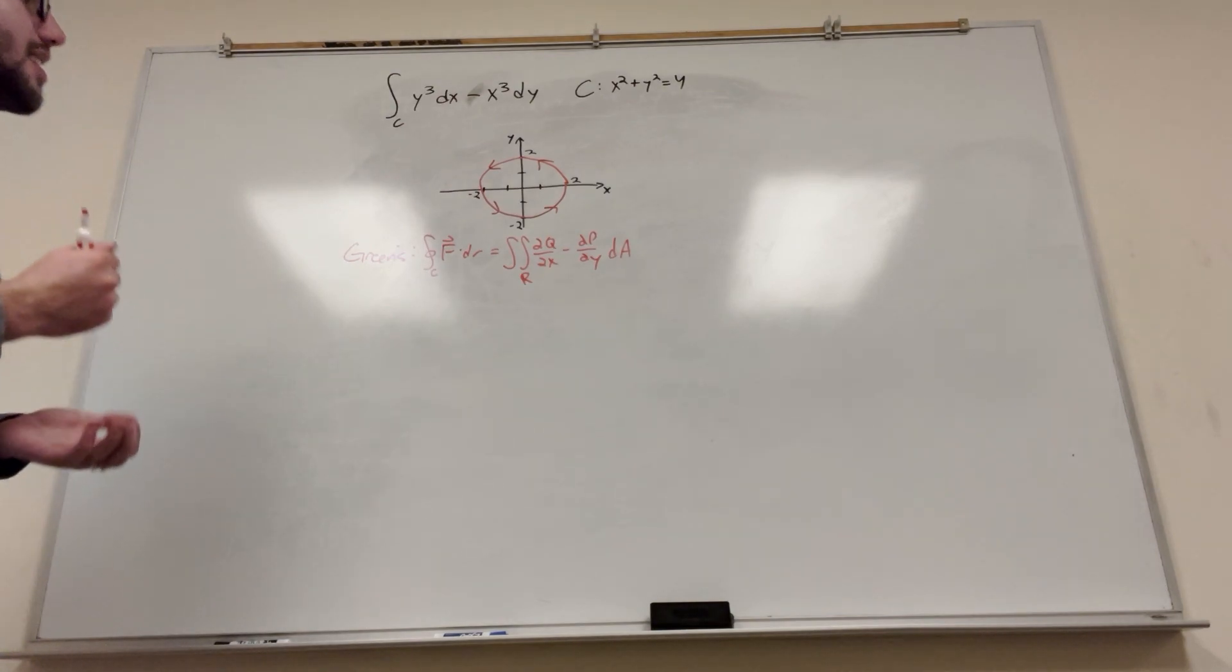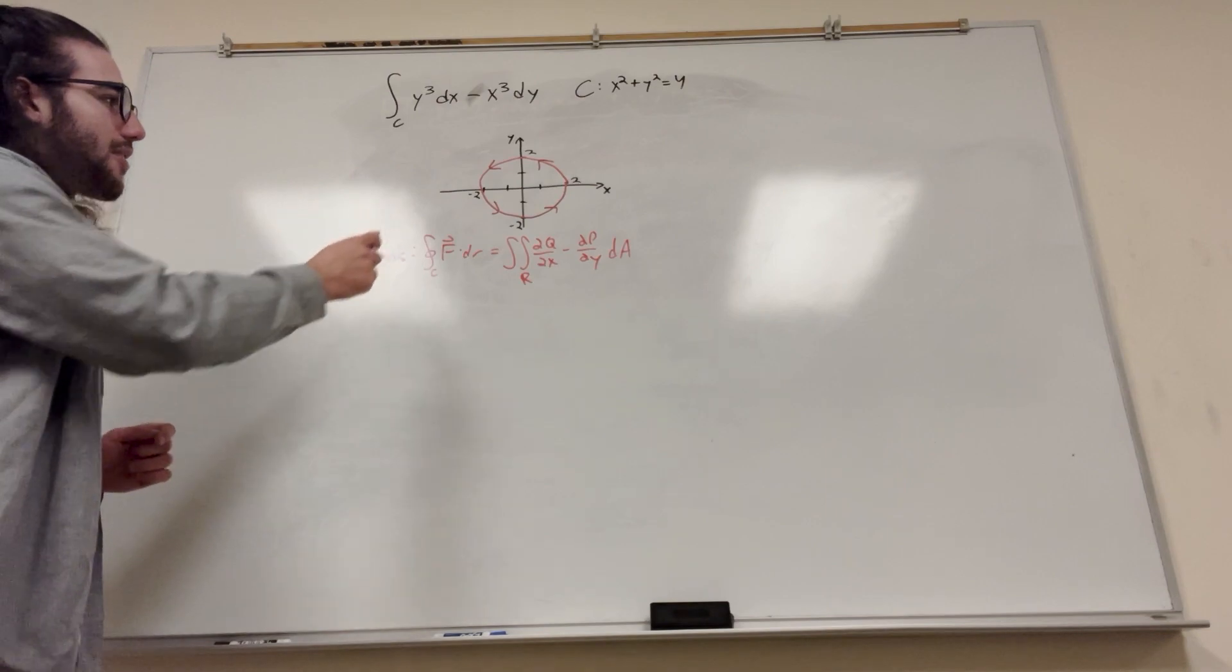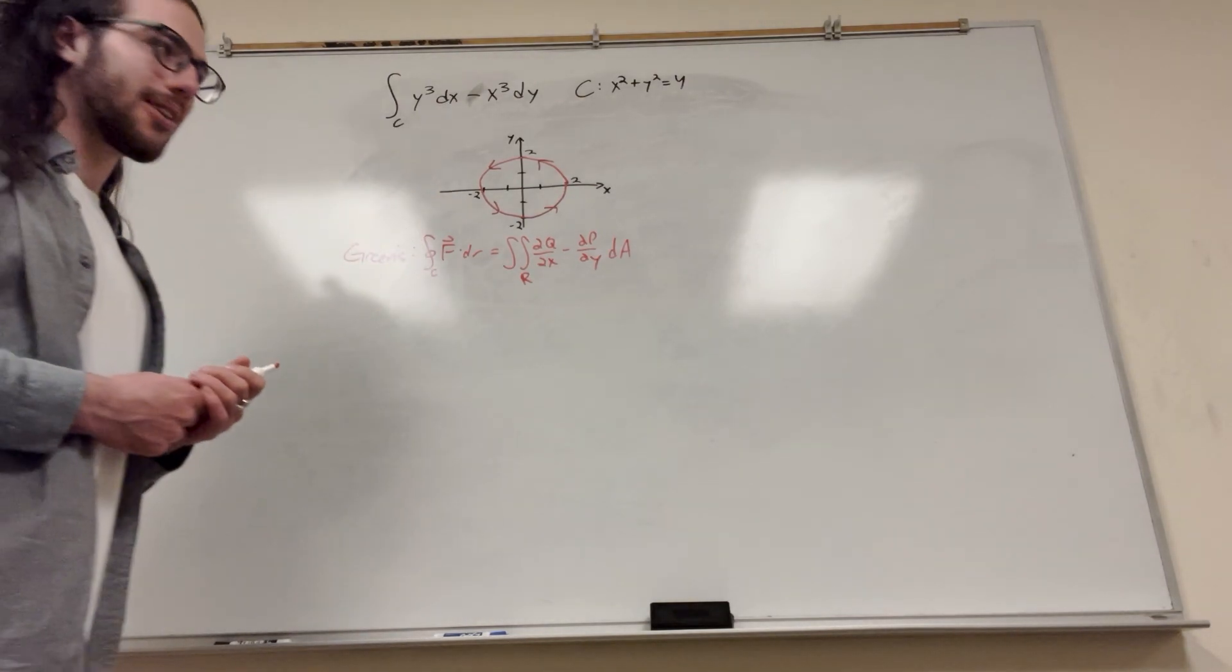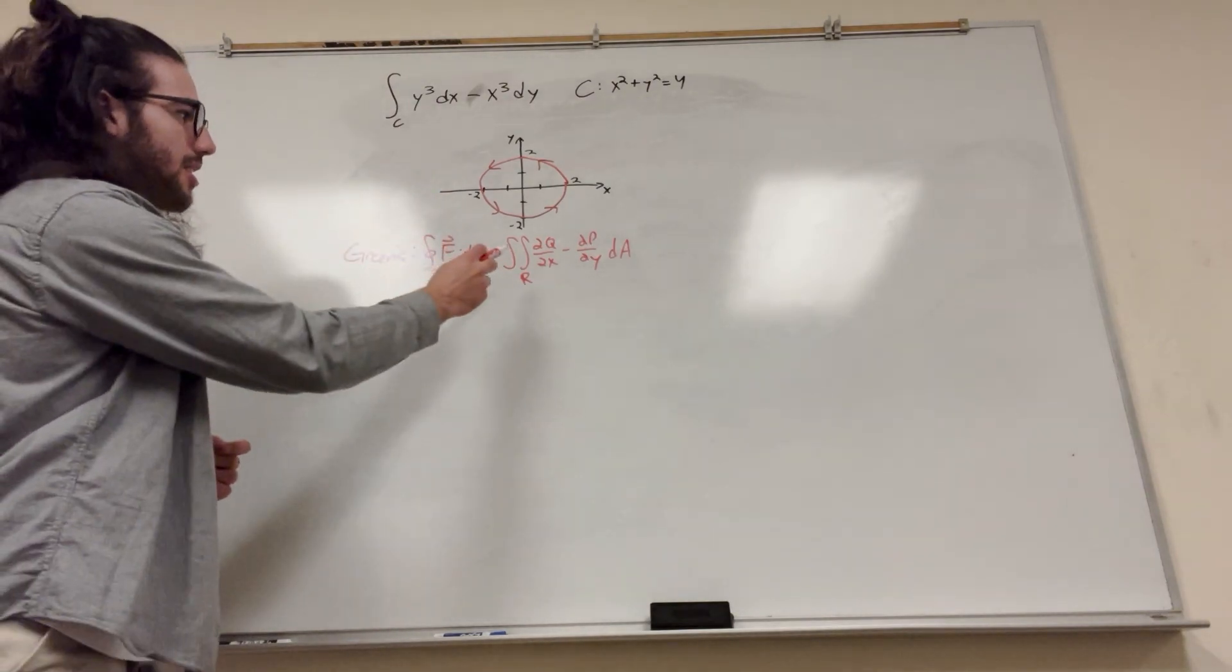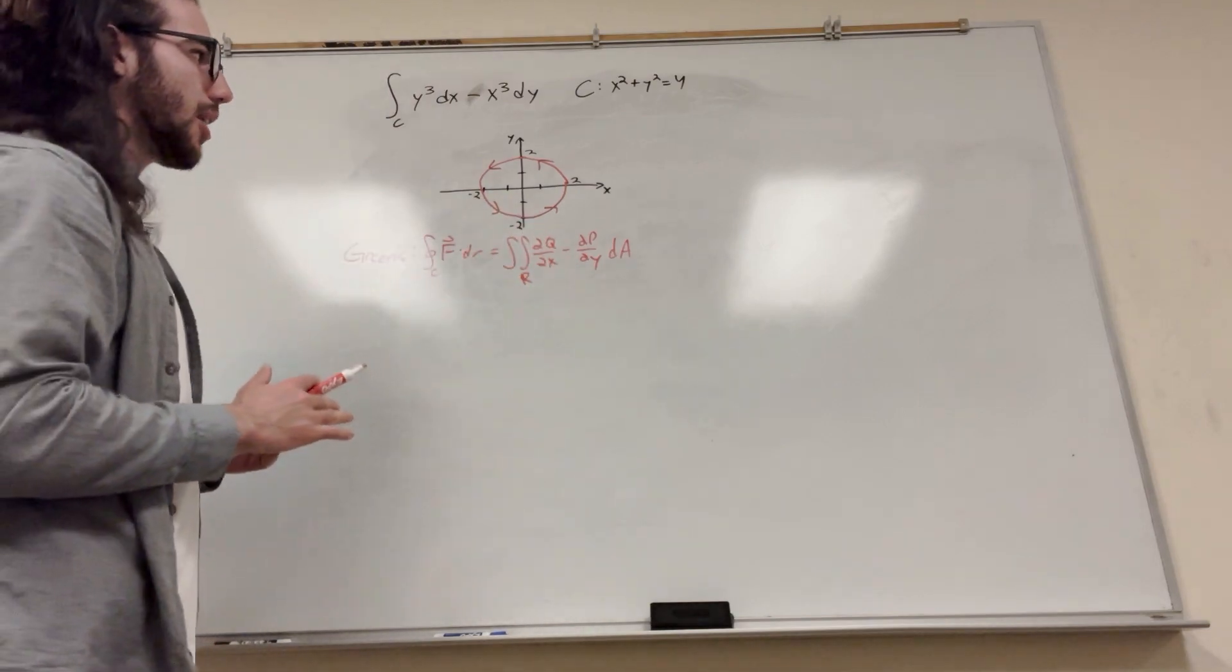So what do we do? Our Green's Theorem tells us that if our field is a closed, simple region that goes counterclockwise, then our line integral is equal to the derivative of q with respect to x minus the derivative of p with respect to y over our region.